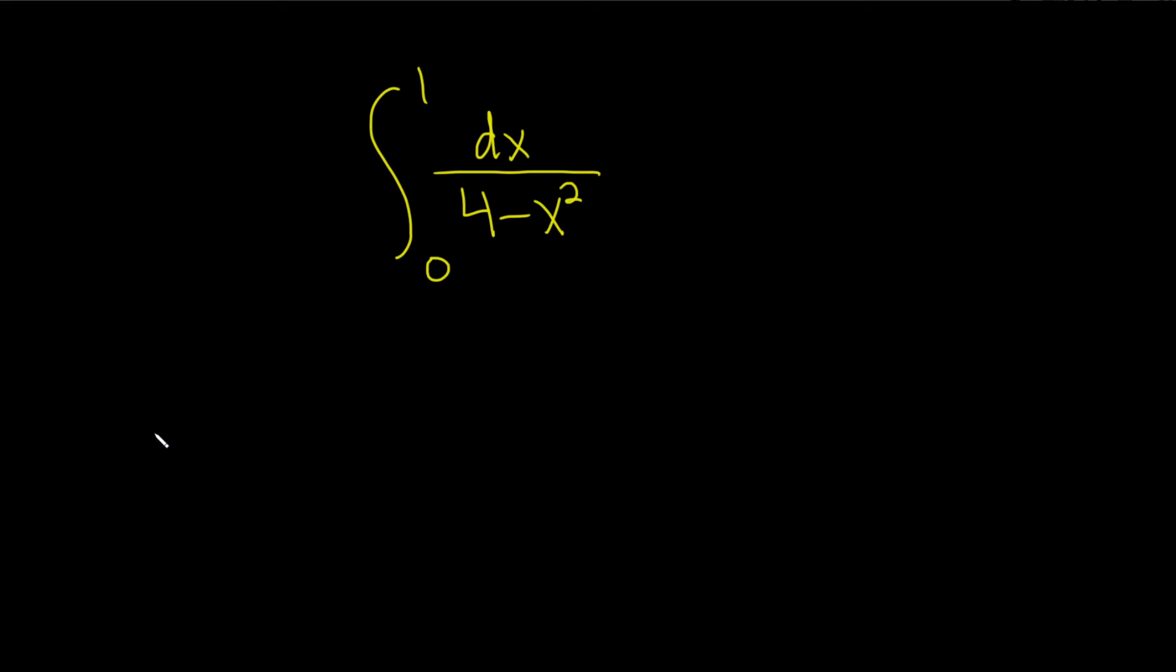Hi everyone. In this problem we have to integrate dx over 4 minus x squared from 0 to 1. So there's a couple ways of doing this. You can use partial fractions, or you can use a formula.